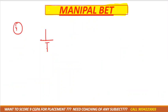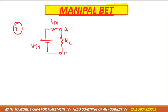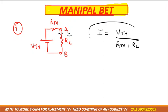Last step of Thevenin theorem: place VTH and RTH in series, then reconnect RL in the same position where it was removed. The formula for current is: I = VTH / (RTH + RL).